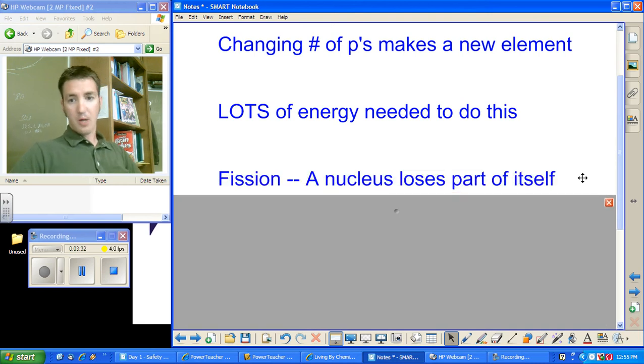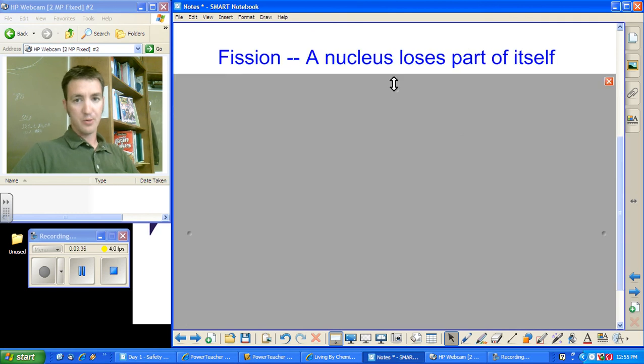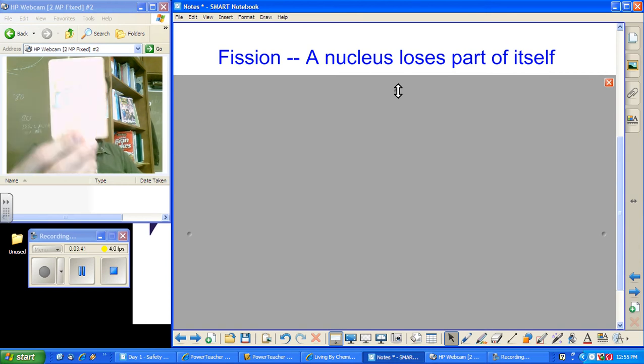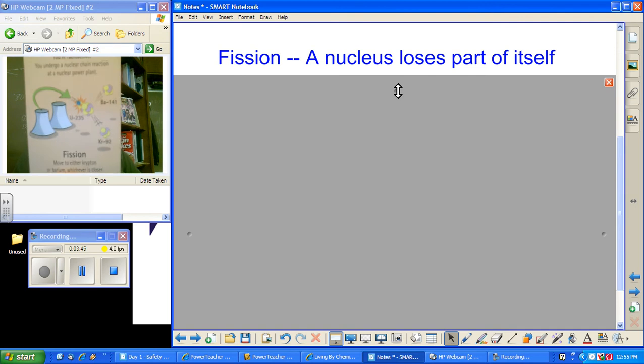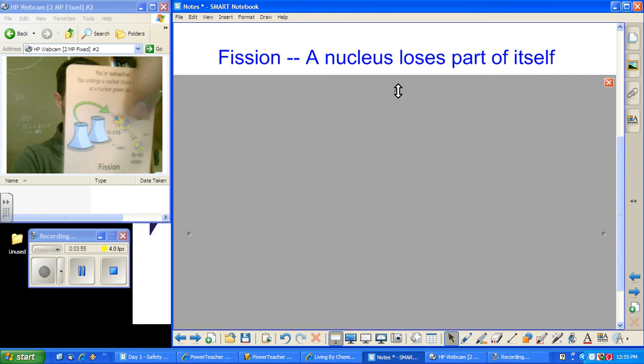So a couple things with this in vocab. Fission is a nucleus loses part of itself or it breaks down. And so, there is lovely, our little card game. Fission happening. That's what we use in our nuclear power plants. You can see the big atom, the big nucleus, is turning into the other ones.